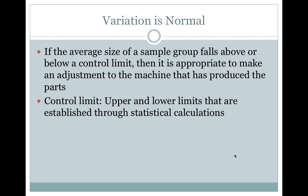Variation is Normal. If the average size of a sample group falls above or below a control limit, then it is appropriate to make an adjustment to the machine that has produced the parts. A control limit is upper and lower limits that are established through statistical calculations.